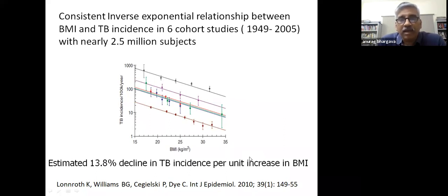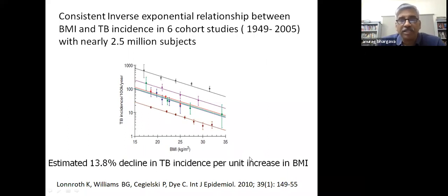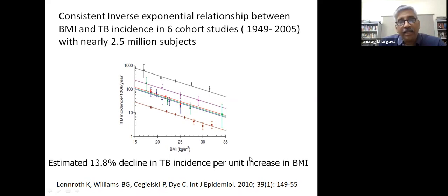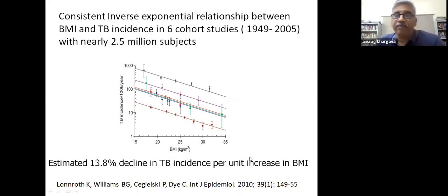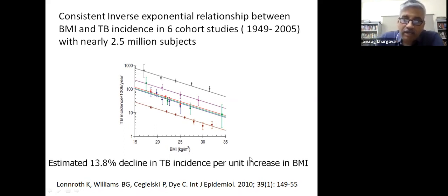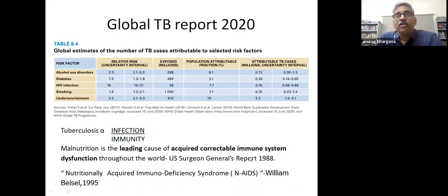Apart from historical opinions, there was strong data from cohort studies done between 1949 and 2005 showing a consistent, inverse and exponential relationship between low BMI—representing undernutrition—and TB incidence. Published in 2010, the authors concluded that potentially per unit increase in BMI there could be a significant decline in TB incidence. This is especially important because even currently we are achieving a TB decline of only two to three percent per year. This was the first time such findings appeared in a global TB report.